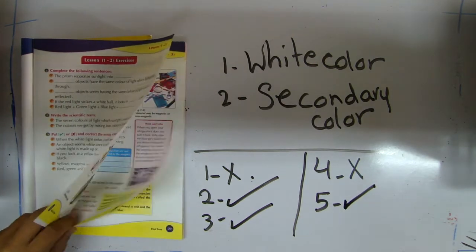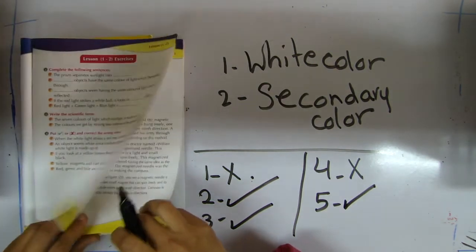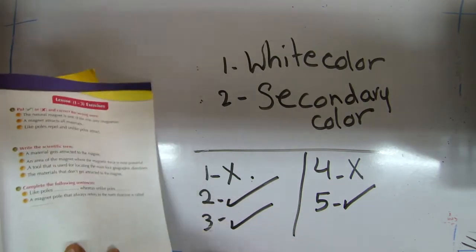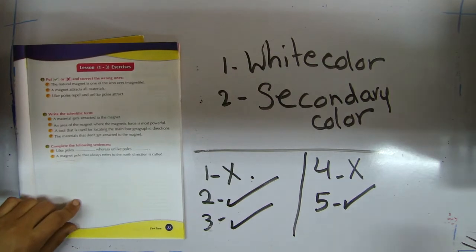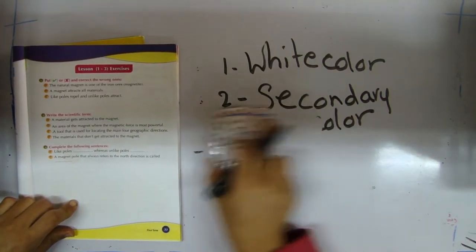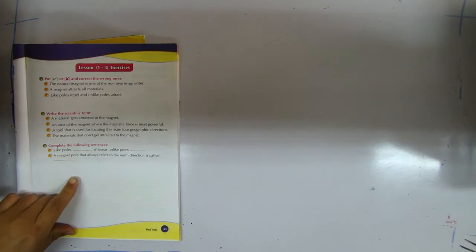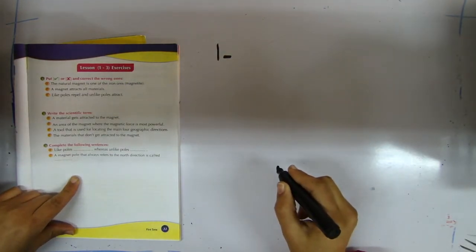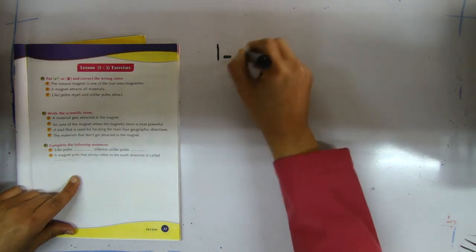Now we finish lesson two. We're going to lesson three, so open page 33. We're going to answer lesson three: magnet or magnetism, page 33. Question number one: put right or wrong and correct the wrong one. The natural magnet is one of the iron ores which is called magnetite. It's correct.